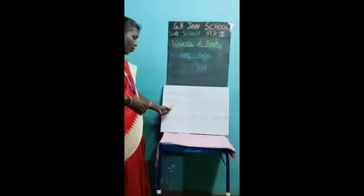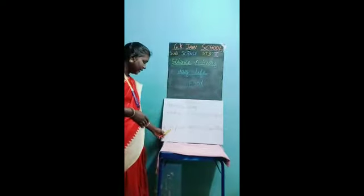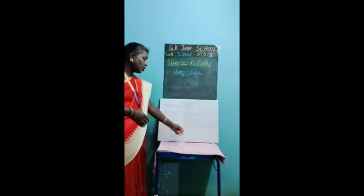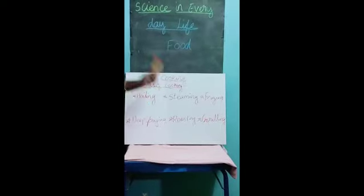The six cooking methods are: boiling, steaming, frying, deep frying, roasting, and grilling. Boiling means some food you have to boil and then only you can eat — that is called boiling. In our home, mummy will cook rice by boiling. Then only she can cook rice for you. So boiling is a process of cooking.